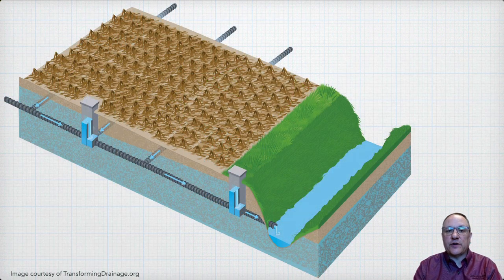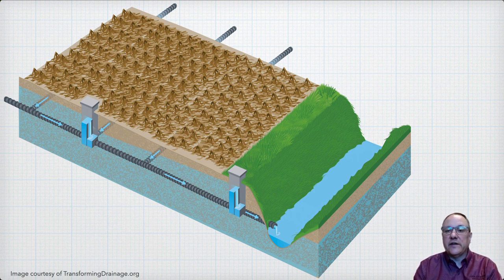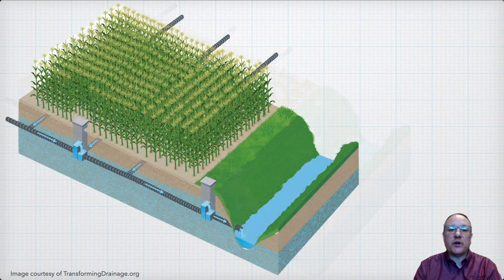Some basic concepts of controlled drainage are: during the non-growing season when drainage is not needed, the outlet elevation is raised to hold back water to reduce nutrient loss. In the growing season, during periods when full drainage isn't needed, the outlet elevation can be raised to reduce nutrient loss and also to conserve water in the soil to help supply crop water demands.